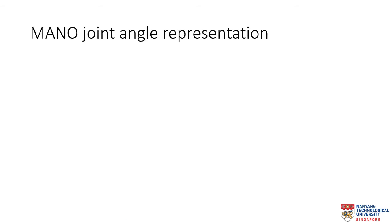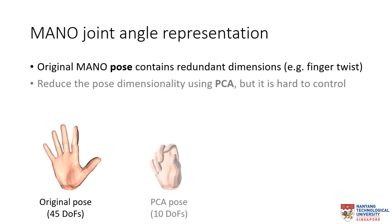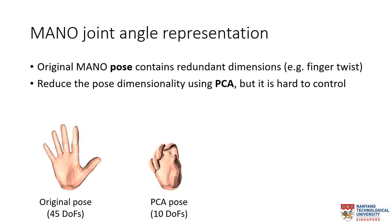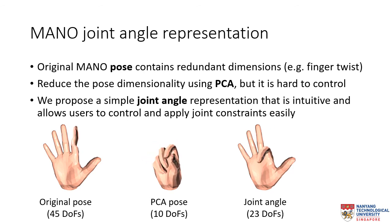Our next contribution is to use a joint angle representation to articulate the hand model. The original Mano pose contains 3 degrees of freedom for each finger joint, and these redundant dimensions could result in infeasible hand poses such as the twisting of finger joints. It is also possible to reduce pose dimensionality using principal component analysis PCA, but it can be hard to control individual fingers as they move together when a single PCA value is changed. Therefore, we propose a simple joint angle representation that is intuitive and allows users to control and apply constraints easily, such as the flexion of the index finger.